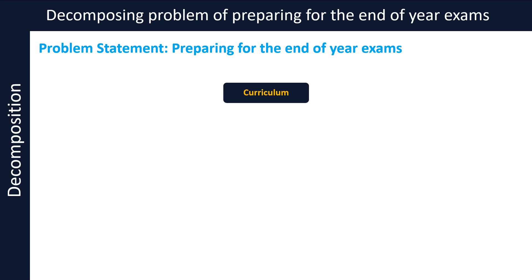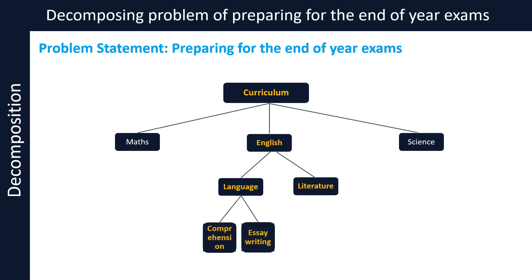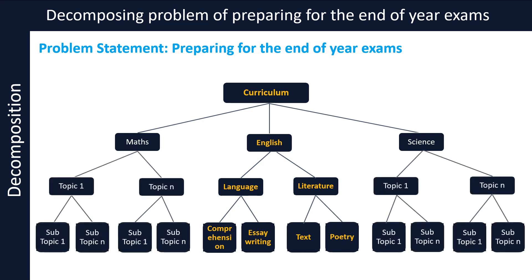Let's break this down. First, we can divide the entire curriculum into individual subjects such as maths, English, science, etc. Then, for each subject, you can divide the subject into main topics that you have to study. For example, English can have main topics like language and literature. We can then further divide each main topic into subtopics. For example, language could be broken down into comprehension and essay writing as subtopics, and literature could be divided into text and poetry. The same could be applied to other subjects. Individual subtopics could now be studied in more detail and independent of each other, and the entire task of preparing for the final exams becomes more manageable and easier.